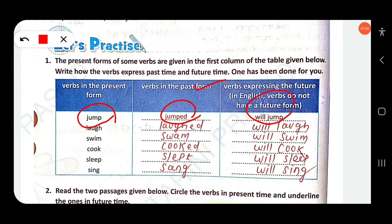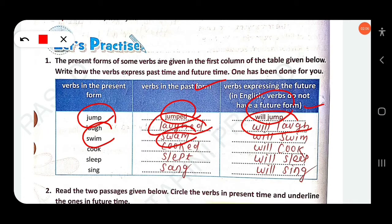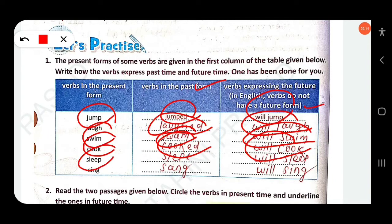The future form is 'will jump.' Next — 'laugh,' past form 'laughed,' future form 'will laugh.' Then 'swim,' past tense 'swam,' future time 'will swim.' Then 'cook,' past form 'cooked,' future form 'will cook.' Then 'sleep,' present form 'sleep,' past form 'slept,' future form 'will sleep.' Then 'sing,' present form 'sing,' past form 'sang,' future form 'will sing.'